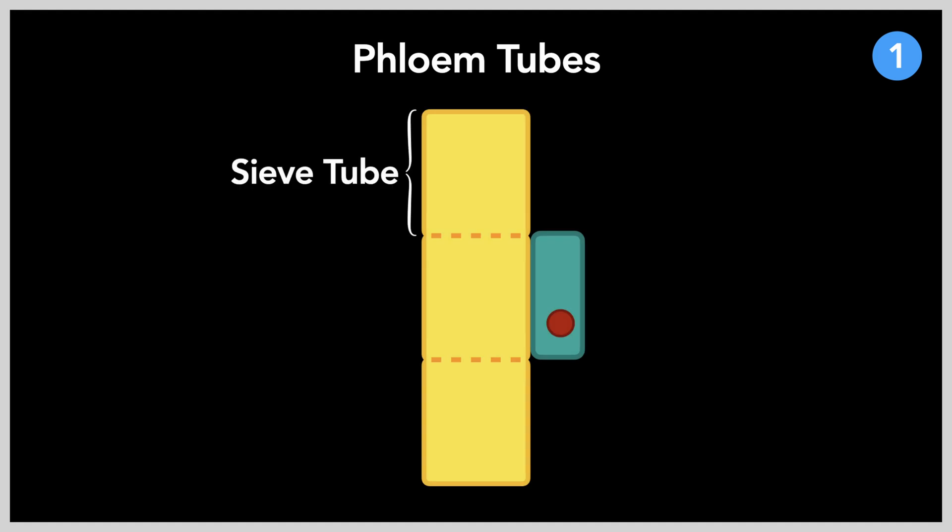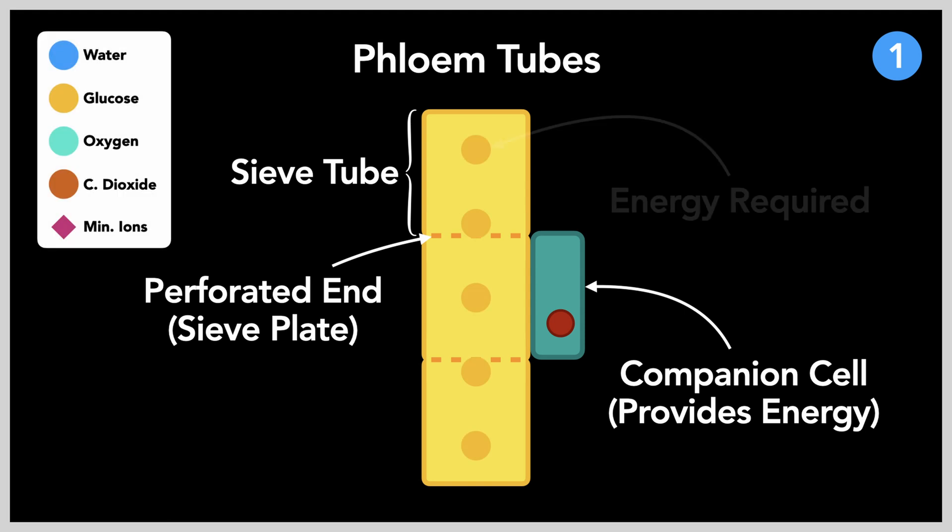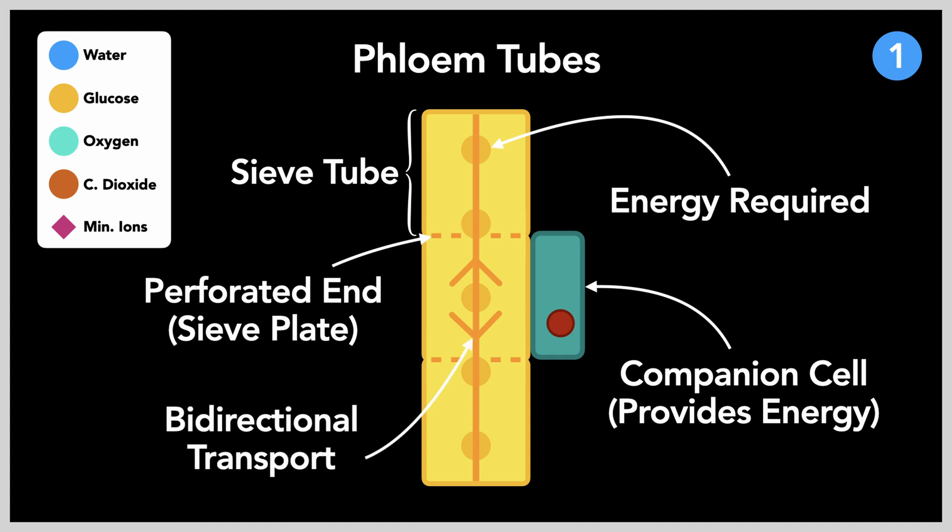The phloem is made up of living cells, notably the sieve tubes, which are specialized transport cells with perforated ends that facilitate substance transport, as shown here, and the companion cells, which are connected to the sieve tubes, which provide energy needed to facilitate transport. Since the phloem utilizes energy for transport, it allows for glucose to be transported in both upwards and downwards directions.